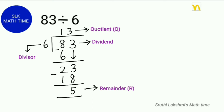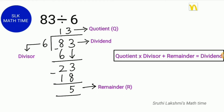The remainder is the amount remaining after division. When one number divides another number completely, the remainder is always 0. Here 5 is the remainder. To check our answer, we do quotient times divisor plus remainder, which equals the dividend.